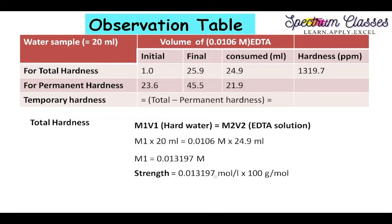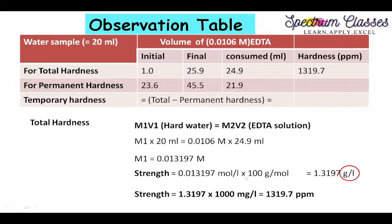Now I am going to calculate the strength. Strength equals molarity multiplied by molecular weight — here the molecular weight of calcium carbonate, which is 100 g/mol, because we express hardness on a calcium carbonate scale. On multiplying, I get 1.3197 grams per liter. Converting grams per liter to milligrams per liter by multiplying by 1000, I get 1319.7 mg/L, which is also expressed as 1319.7 ppm — this is the total hardness of the given water sample.